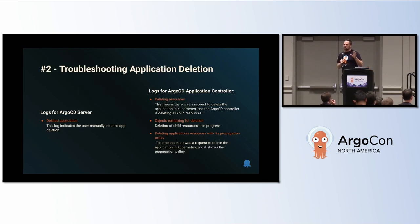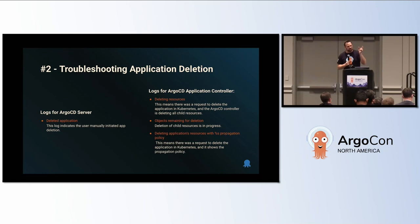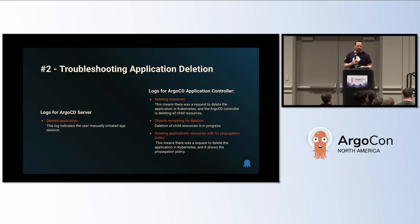To help troubleshoot, there are a couple of places to look in the logs. In Argo CD server, the line 'deleted application' indicates that the user has initiated app deletion. In Argo CD application controller logs, 'deleting resources' means there's been a request to delete an application in Kubernetes and the controller is now deleting child resources. 'Objects remaining for deletion' shows progress, and 'deleting application resources with propagation policy' shows which propagation policy is being used.